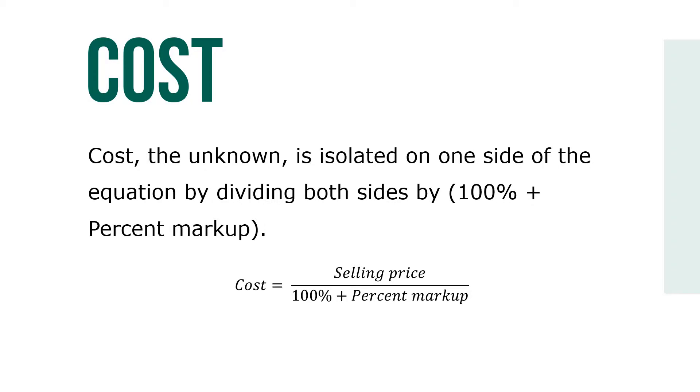Cost, the unknown, is isolated on one side of the equation by dividing both sides by 100% plus percent markup, so cost equals selling price divided by 100% plus percent markup.